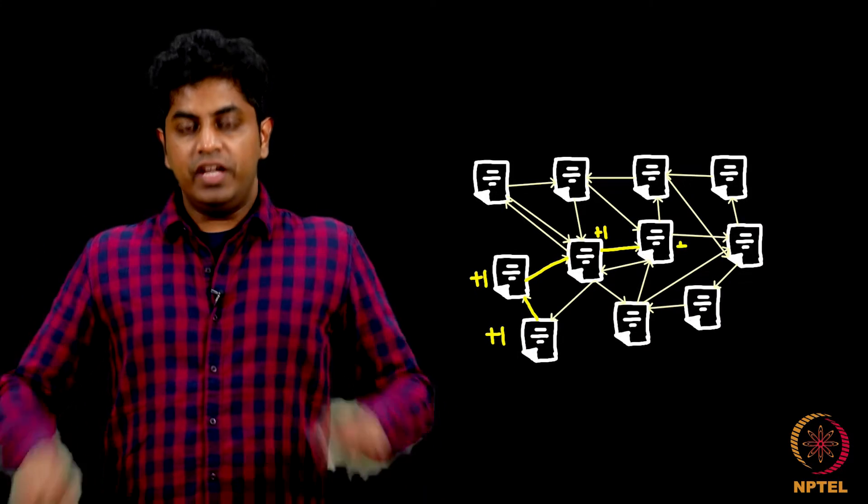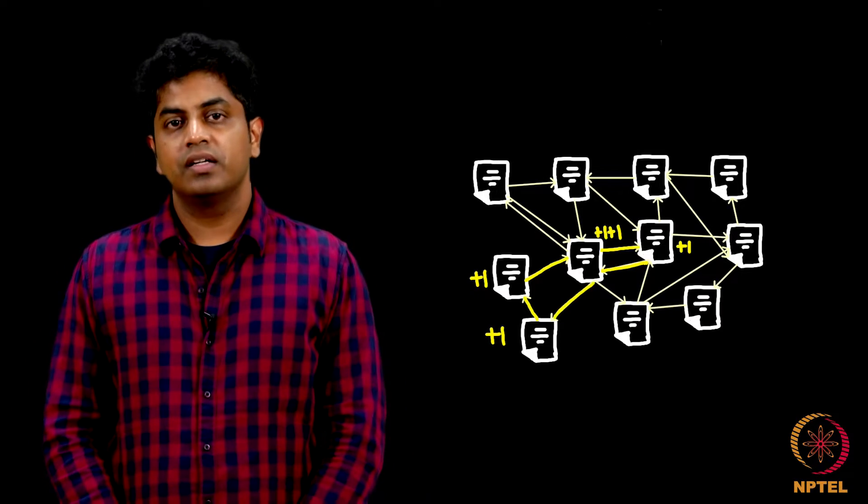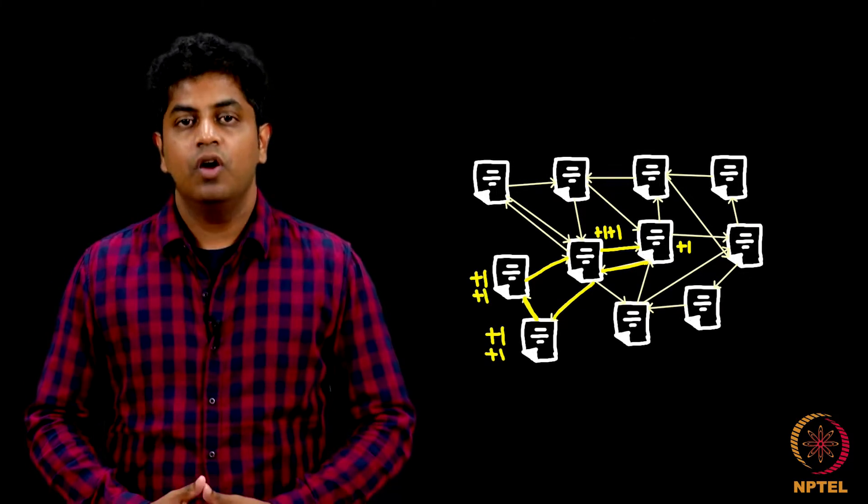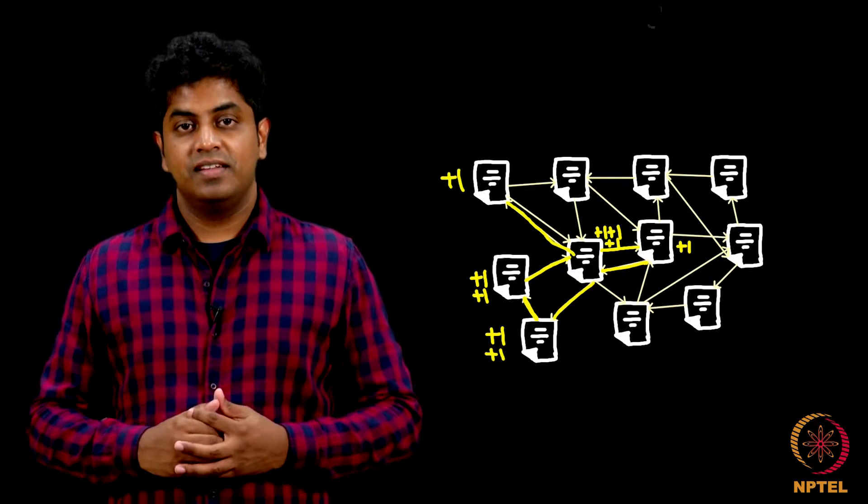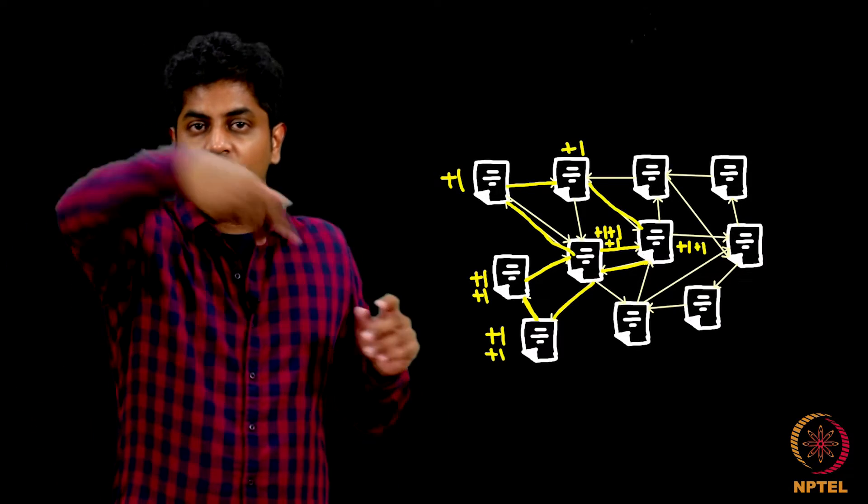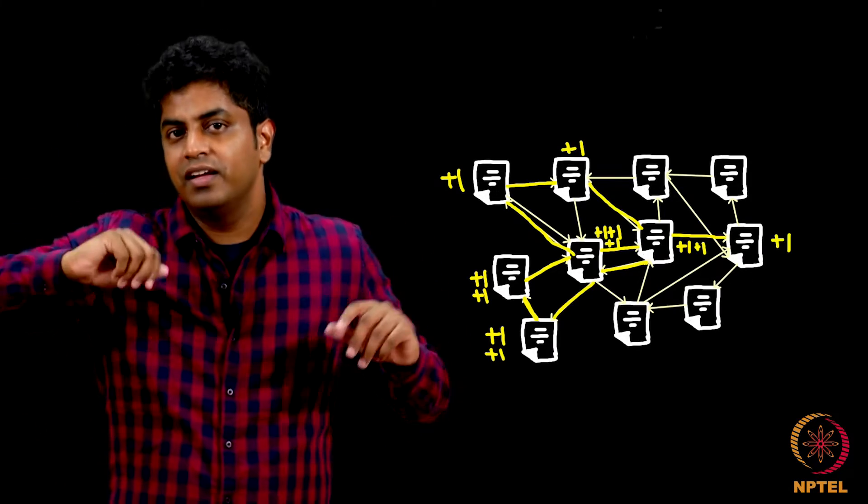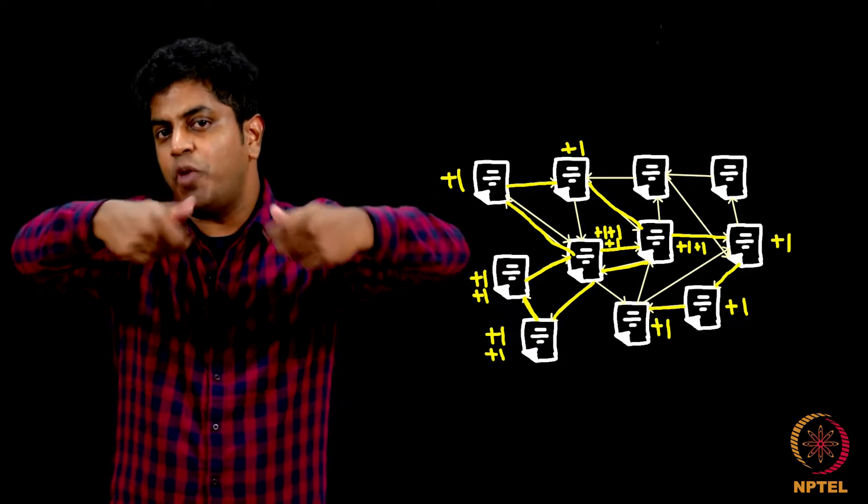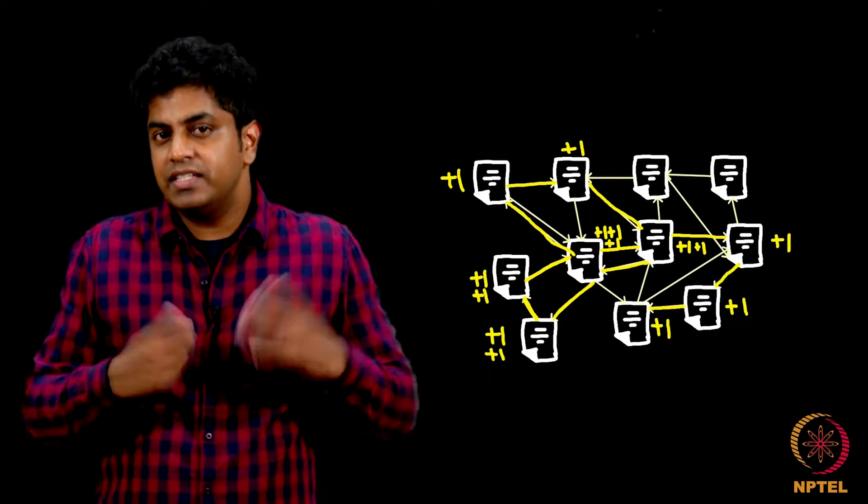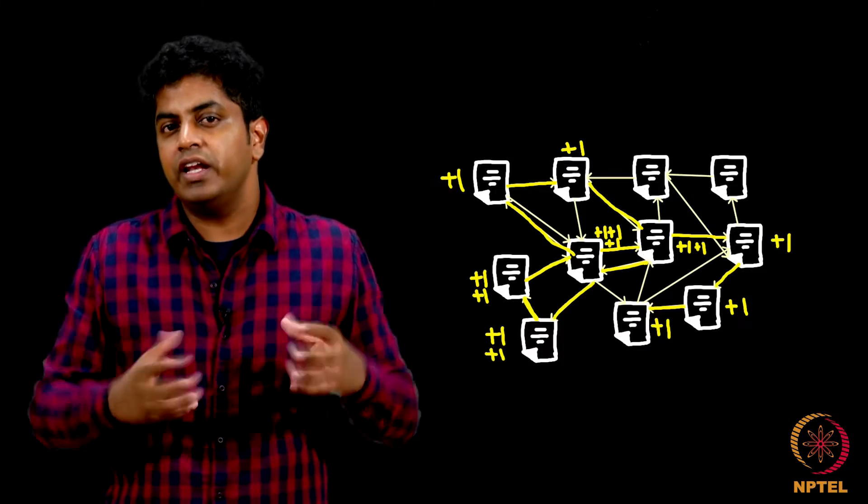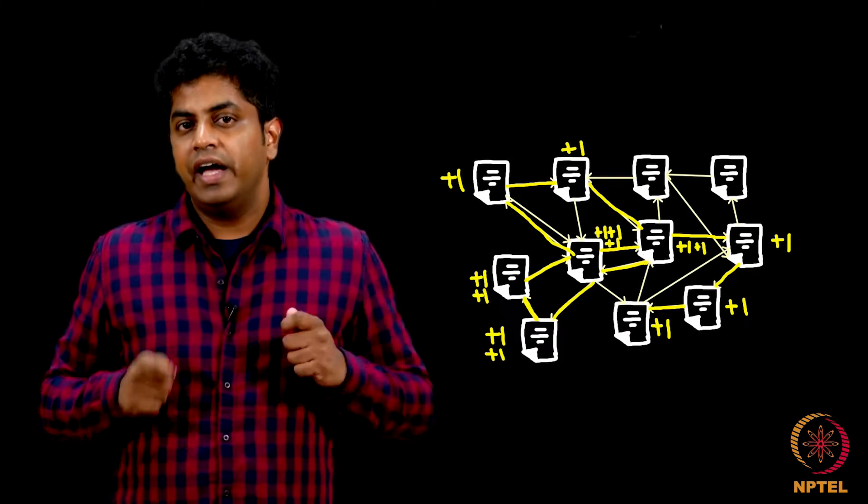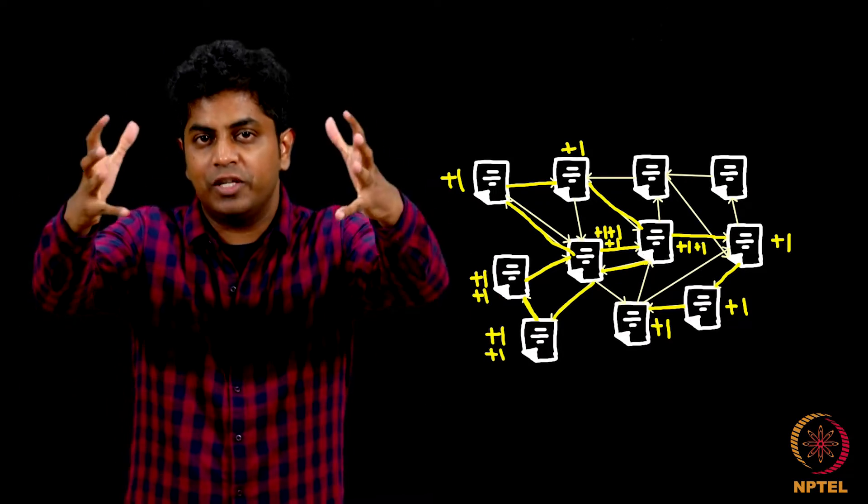And when you search for a keyword in the search engine, what Google does is this. It keeps walking on the web, that is called crawling. It keeps crawling on the web, keeps dropping the gold coins and sees which node has the highest gold coin. Every single page has basically the gold coin accumulation points.